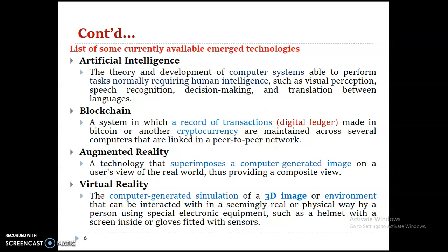The second concept is blockchain — a system in which records of transactions made in Bitcoin or another cryptocurrency are maintained across several computers linked in peer-to-peer networks. One person may buy Bitcoin from another person without a third party — that is a person-to-person transaction. The record of such transactions is what we call blockchain. There is no central database; the transaction record is transferred from person to person.